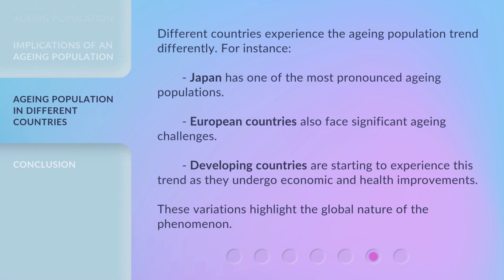Different countries experience the aging population trend differently. For instance, Japan has one of the most pronounced aging populations. European countries also face significant aging challenges. Developing countries are starting to experience this trend as they undergo economic and health improvements. These variations highlight the global nature of the phenomenon.